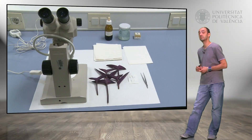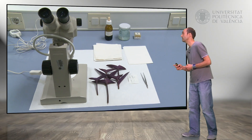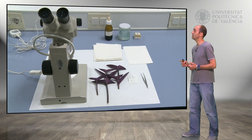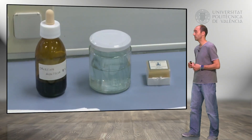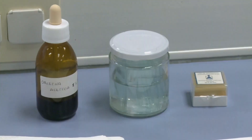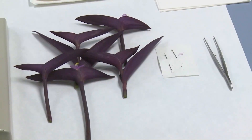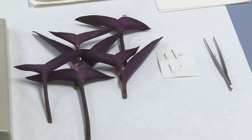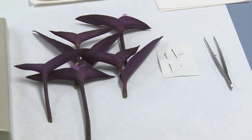Here we see the material. We have the flowers, the lens, the orcein, and the petri dish. We have the slides and the covers that we are going to use to stain and to mount the anthers. Here we have flowers in different stages, the needles, and the forceps.